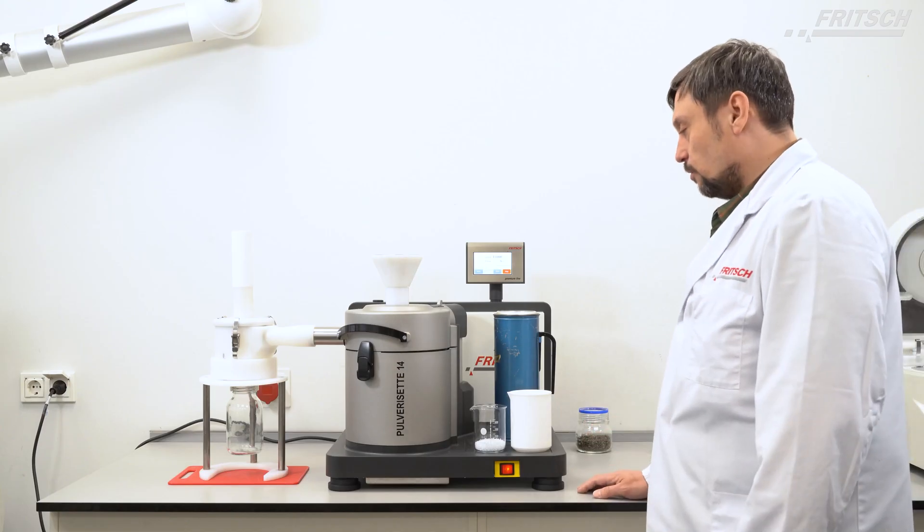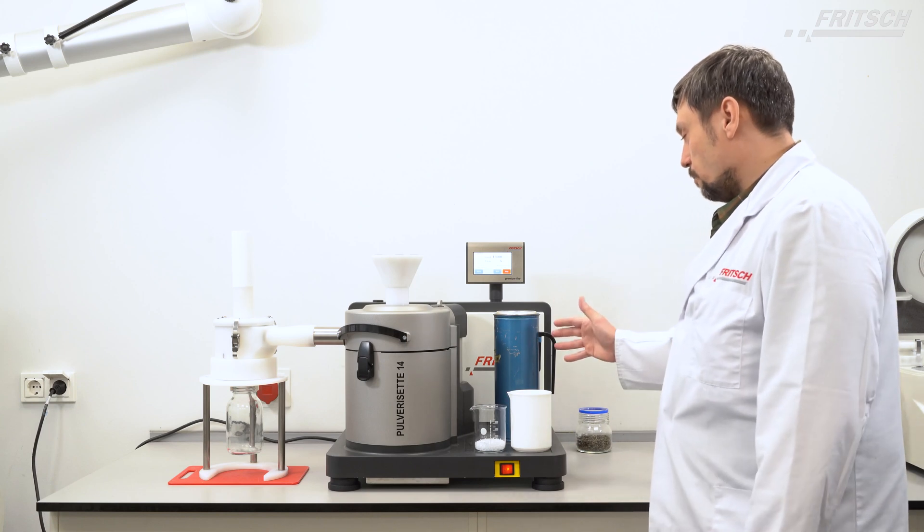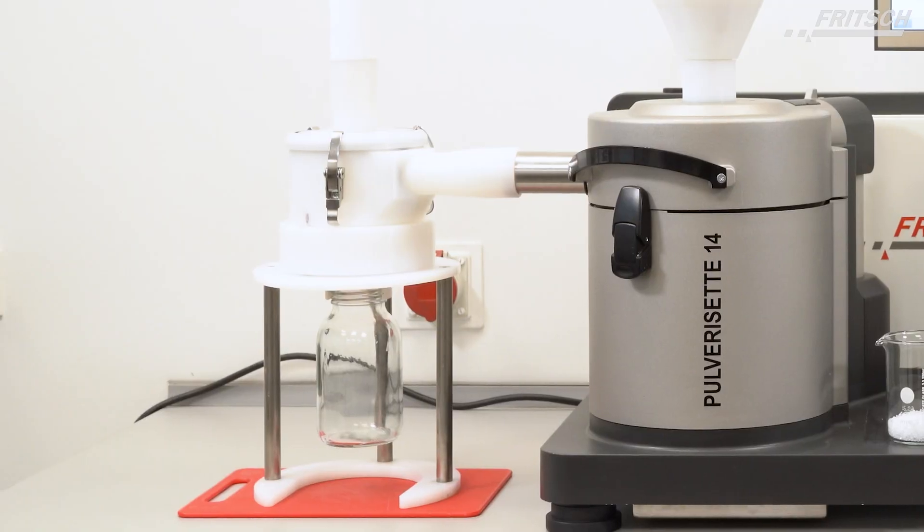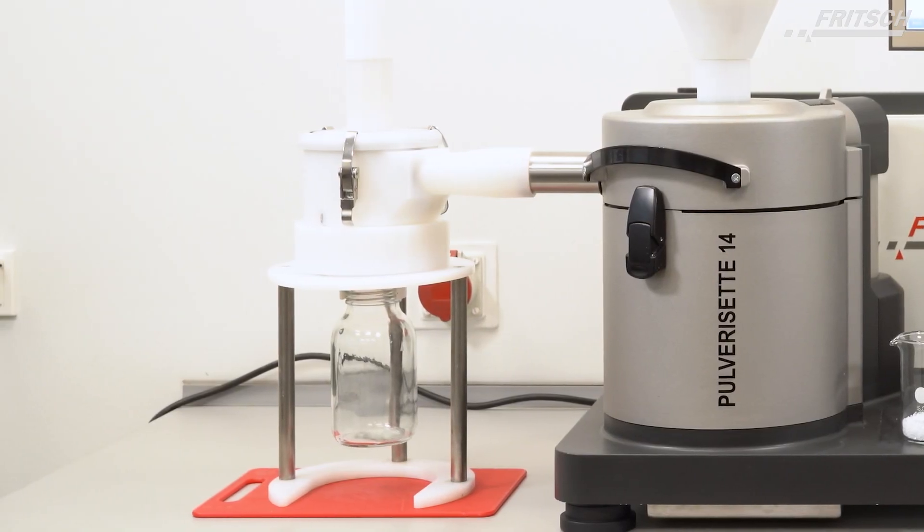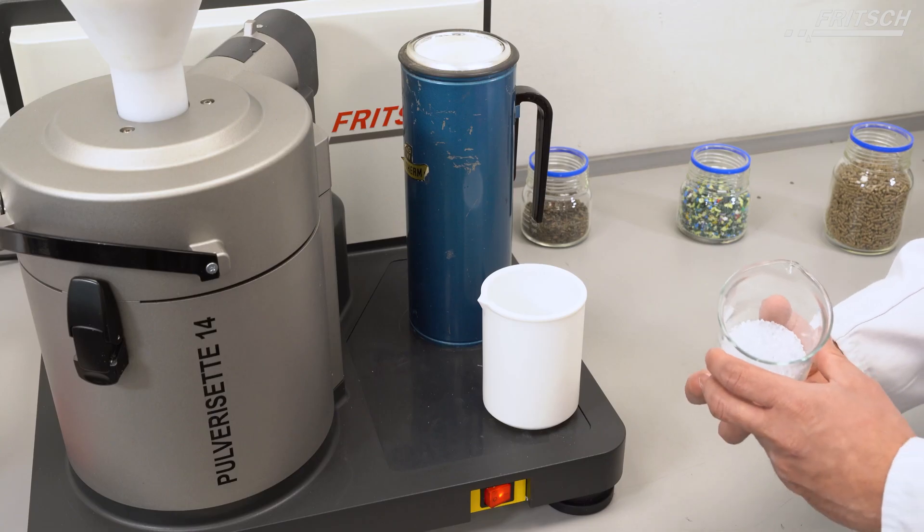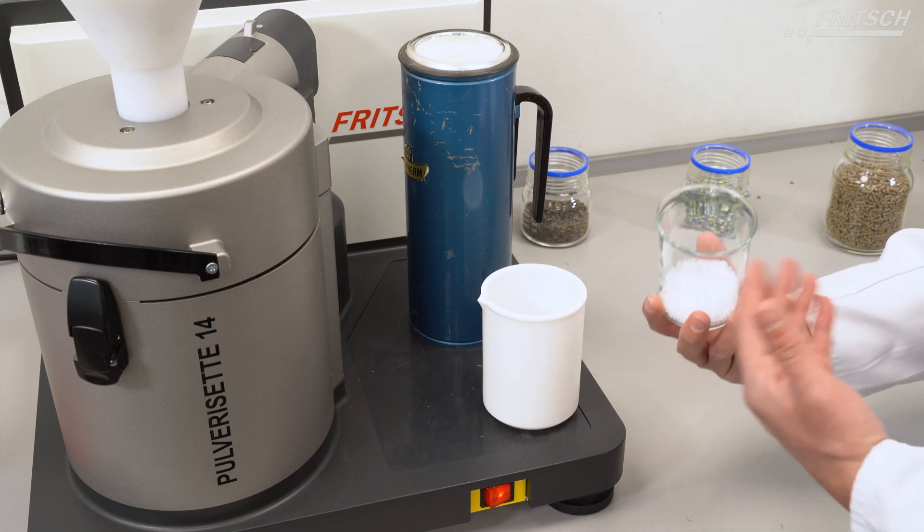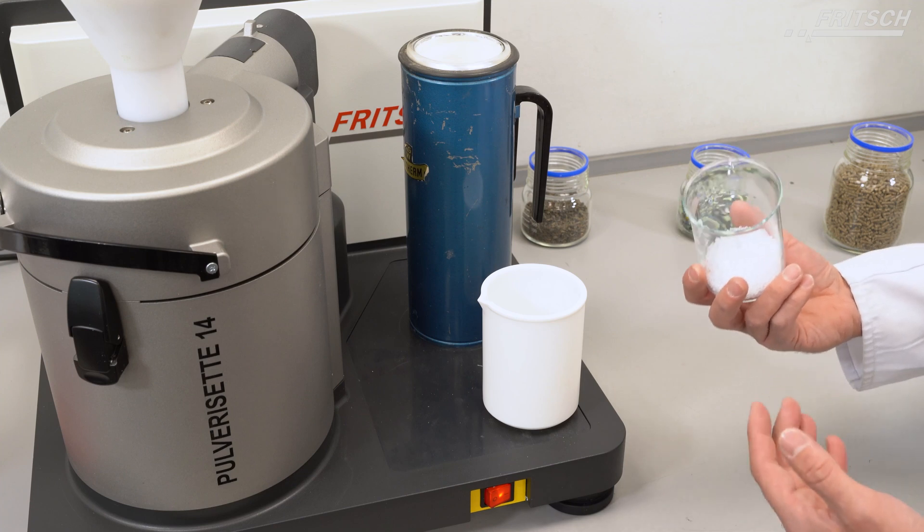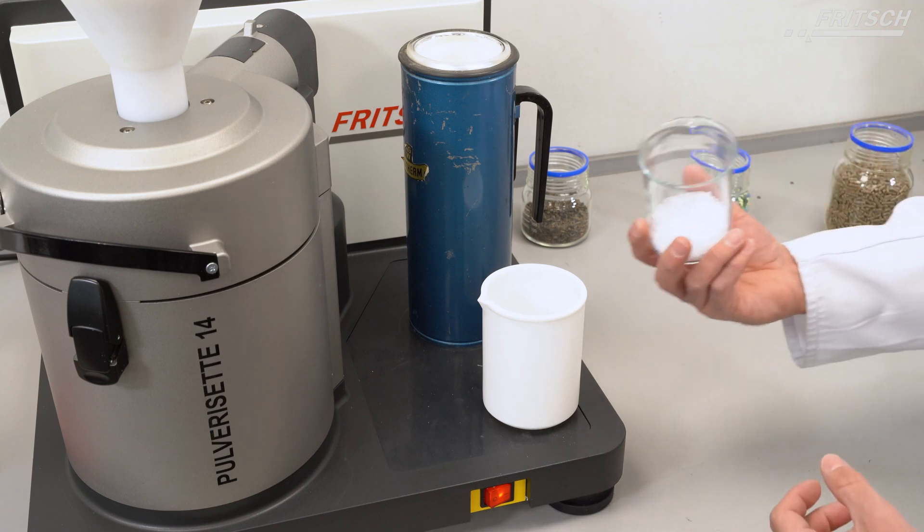We want to grind these polymers with the help of liquid nitrogen and the small volume cyclone separator into micron range. These polymers like to stick or melt when they are ground with high energies, therefore they need to be embrittled.